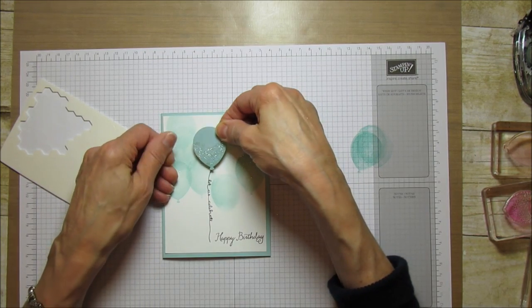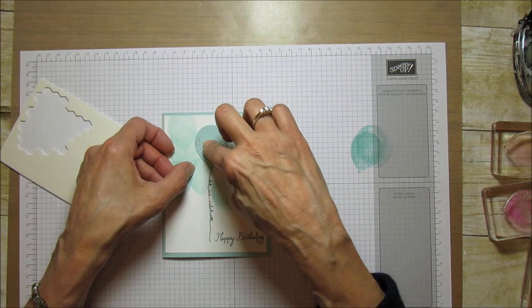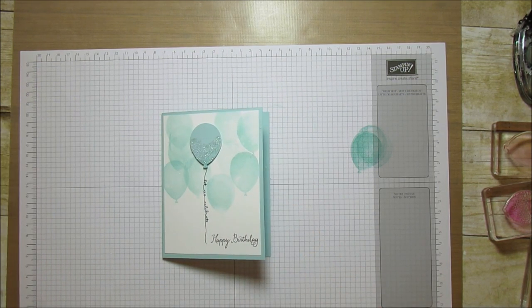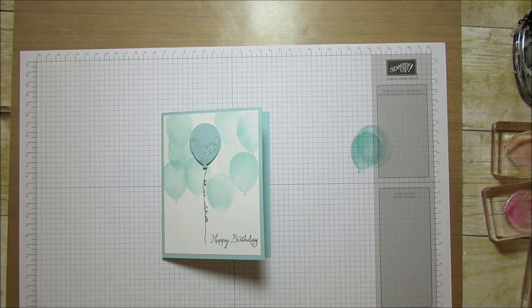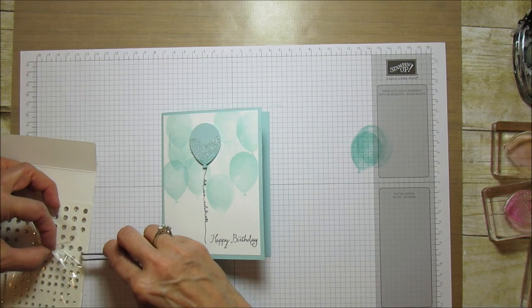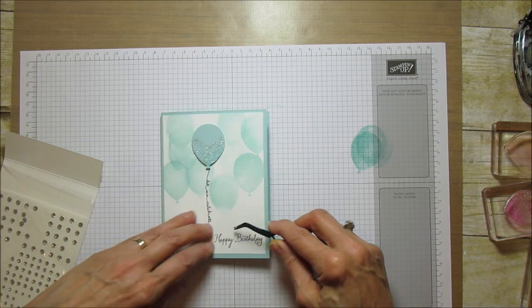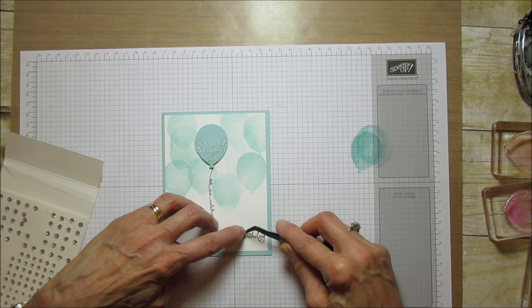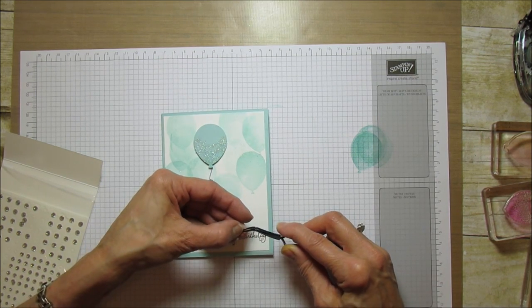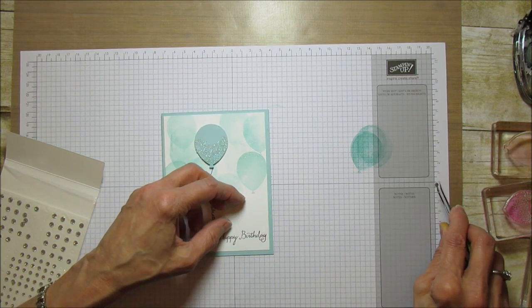The last but not least is I'm going to add a little rhinestone to the dot - the 'i' in birthday - and it just adds a little something. These are sticky on the back so it wants to stay on my little tweezers here.